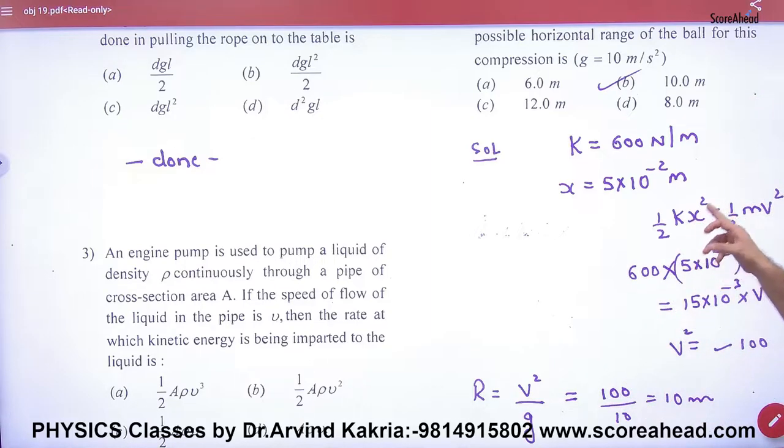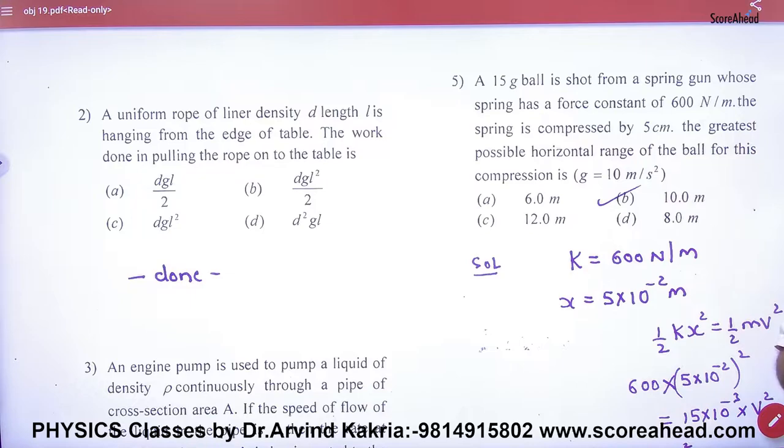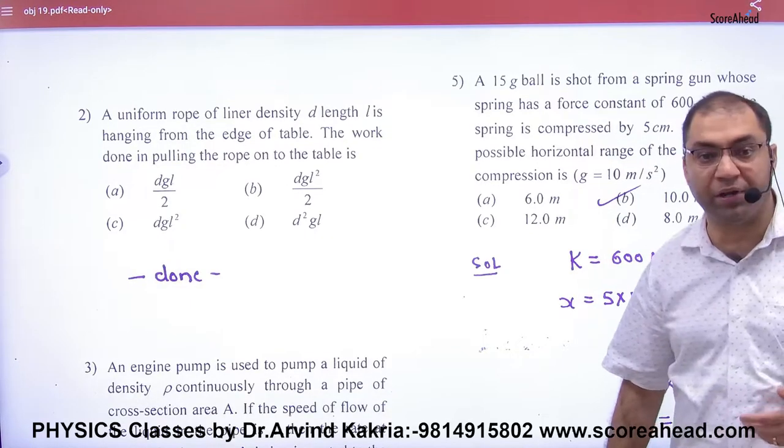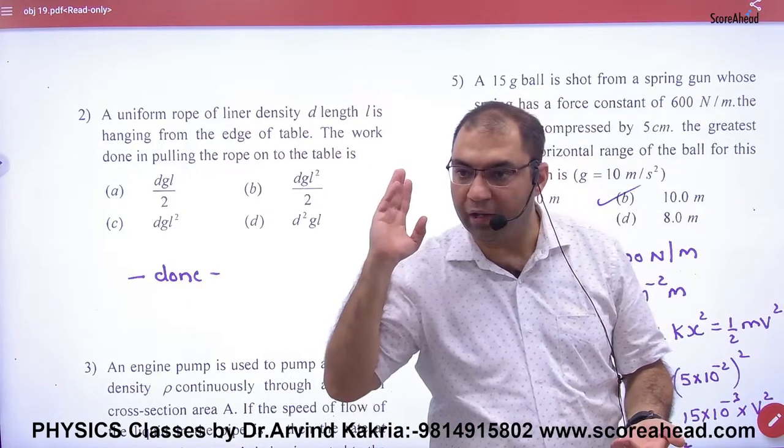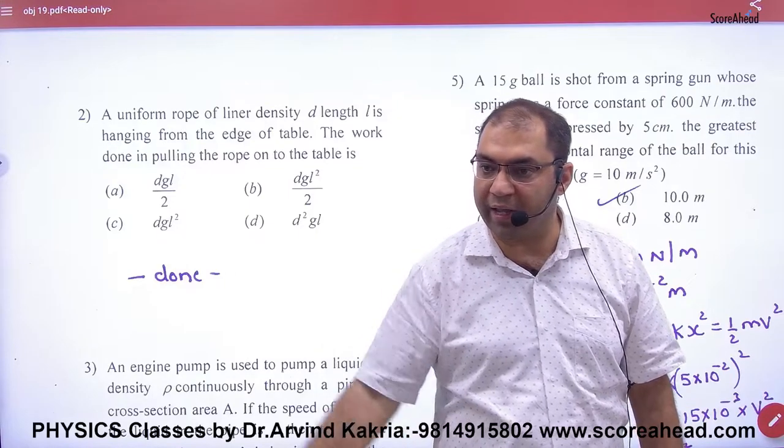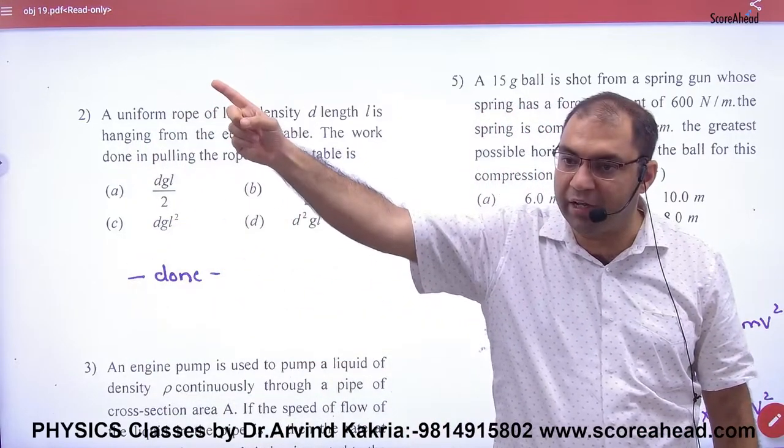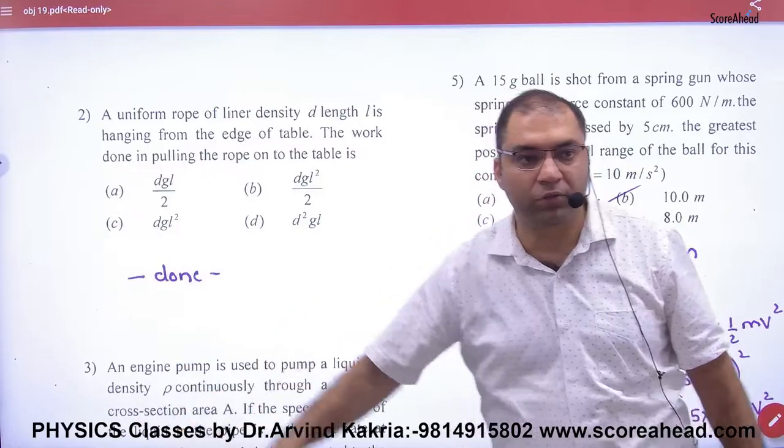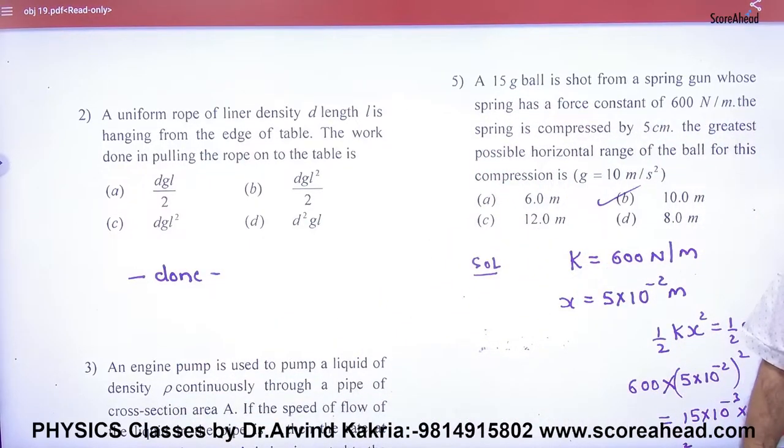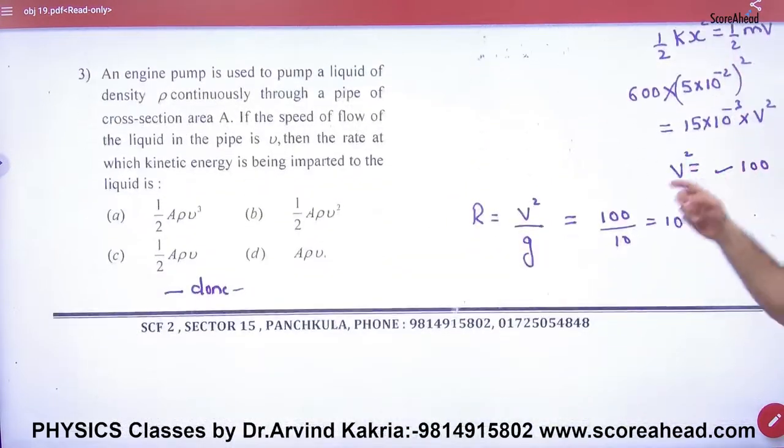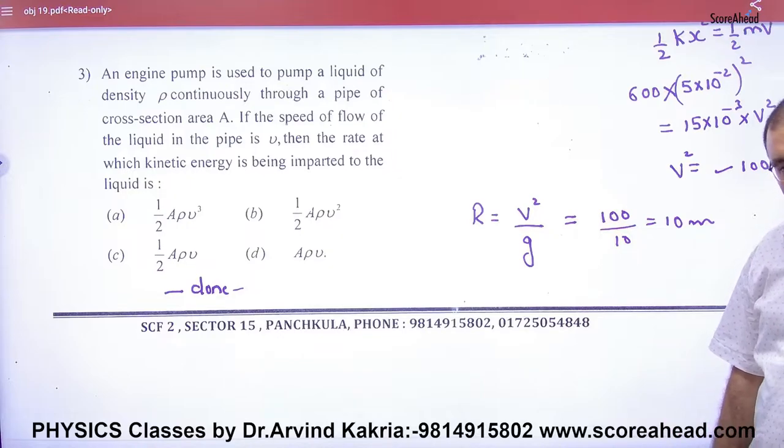So you know k, x, and mass, so what will be solved? Mass velocity. In the question, greatest possible range. What is the range? Projectile. How will you play at an angle of 45 degrees, so the range is max. So the maximum range value is here.